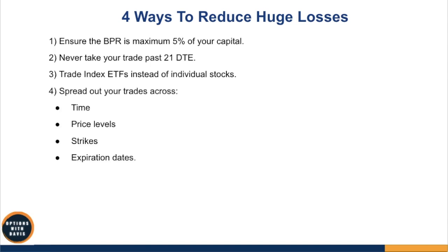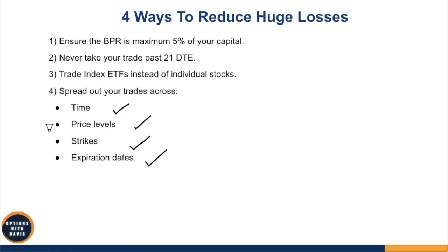Finally, you want to spread out your trades across four dimensions. Spread out against time — put on trades at different dates, not all on the same day. Put on trades at different price levels. Also diversify by different strikes, and have different expiration dates. When you do all this, you are really spreading out your risk — one strangle might be profitable, another might be a loss, another a big winner. This will smooth out your P&L volatility. These are the four ways to reduce your huge losses when trading the strangle.